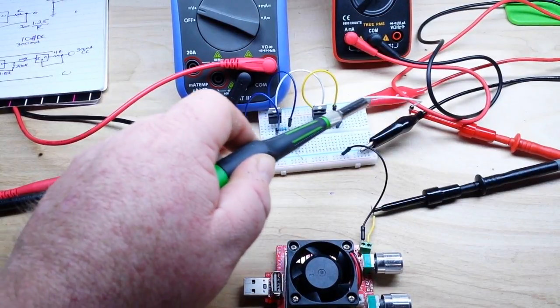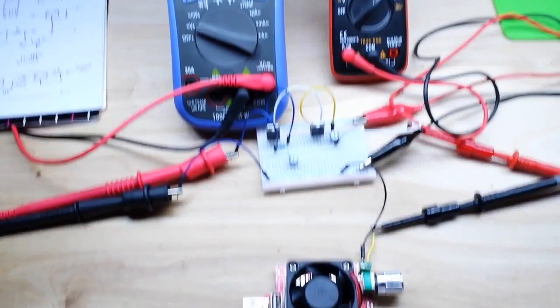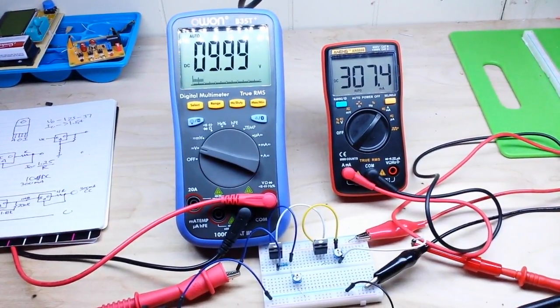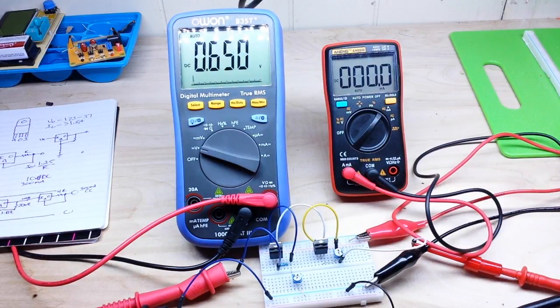And that is being measured right here in series with our load. Now if you're going to use a circuit like this, you're definitely going to want to have heat sinks on those LM317s. Since we're just doing it for shits and giggles here, I don't have any heat sinks on them. Now I'm going to shut off the bench power supply.